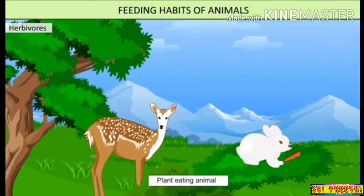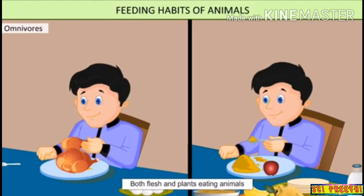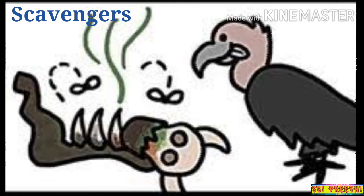Herbivorous animals eat only plants, so they are plant-eating animals. Carnivorous animals eat only flesh, so they are called flesh-eating animals. Omnivorous animals eat both plant and animal sources, so they are both flesh and plant-eating animals. Scavengers feed mainly on dead and decaying animal and plant matter.